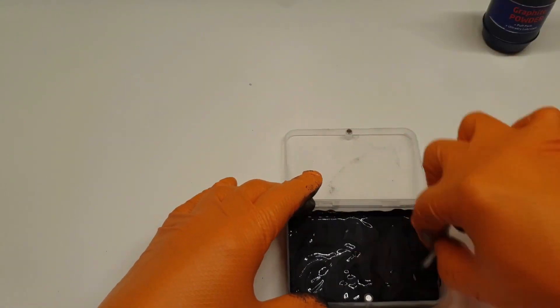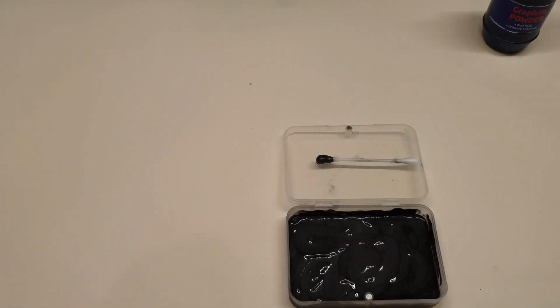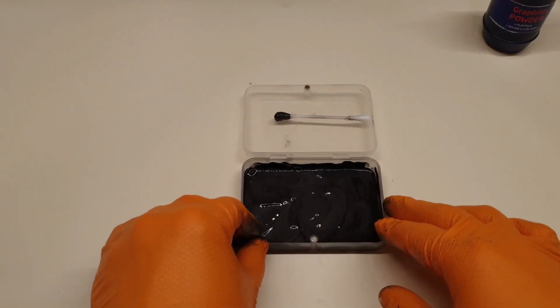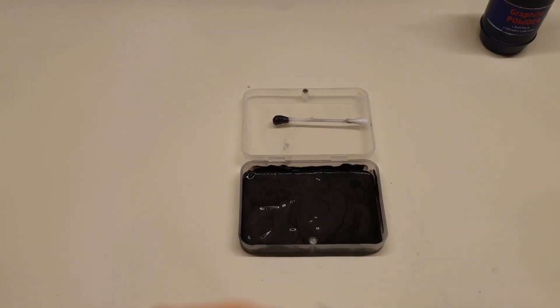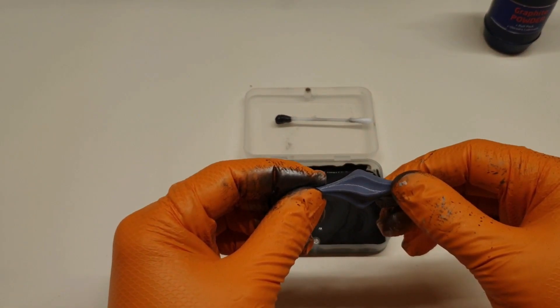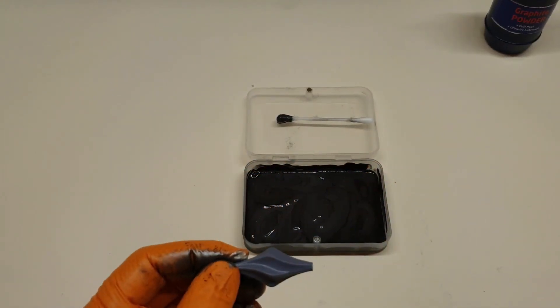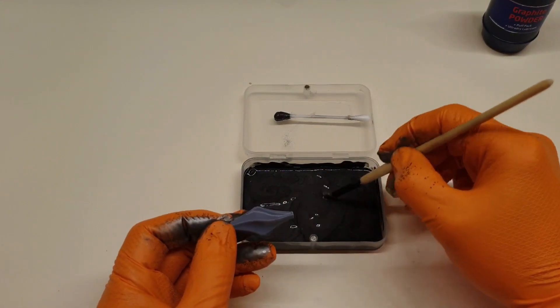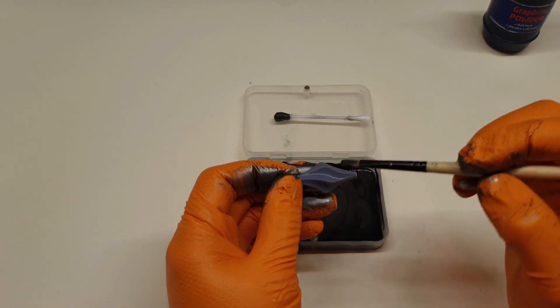Creating the paste is very simple. Add a small amount of graphite and a small amount of alcohol to a container and mix thoroughly. You'll be aiming to get the consistency of an acrylic paint, so if the mixture is too runny add more graphite. If the mixture is too thick, add more alcohol.